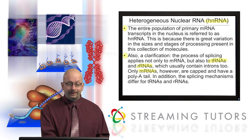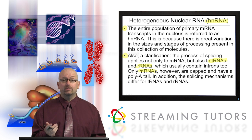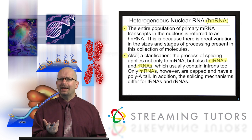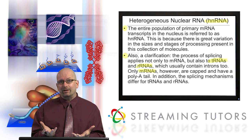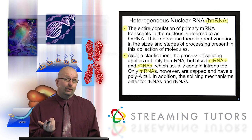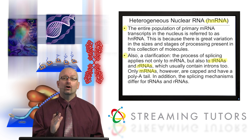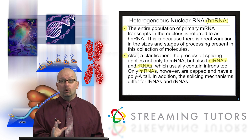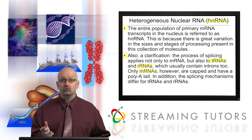Only mRNAs get the cap and the poly-A tail. So generally, all RNAs are spliced, but mRNAs specifically need the cap and the tail — implying those modifications specifically have to do with the informational aspect of a messenger RNA. The mechanism of splicing is different for tRNAs and rRNAs.